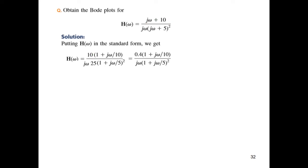From the numerator it will become 10 times (1 + jω/10), and if you take common 25 from this, then it will become jω 25(1 + jω/5) whole square. And 10 divided by 25 will be 0.4. So this is the final shape of our transfer function in the standard form.